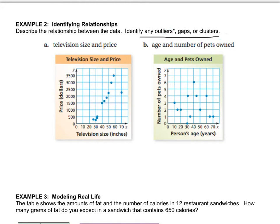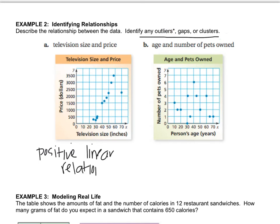For television size and price, it looks very positive and linear — a really steep line going up. Other than this one dot right here, which we'll call an outlier, we have a positive linear relationship. There's a cluster here, and a gap where nobody sells televisions in the high 30s range. And then there's that outlier.